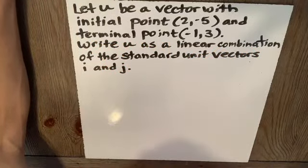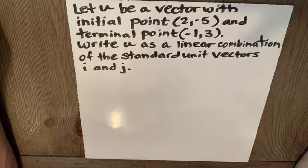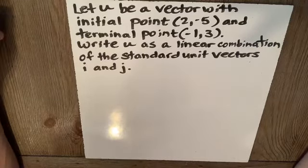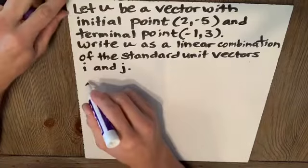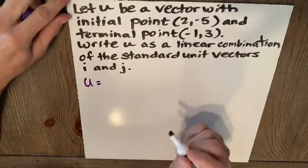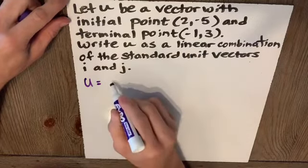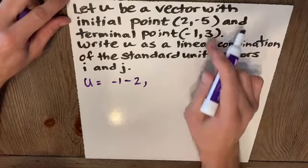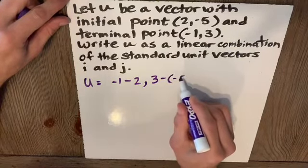Let u be a vector with initial point (2,-5) and terminal point (-1,3). Write u as a linear combination of the standard unit vectors i and j. This is a very simple problem. Let's first find out what vector u is. Vector u will be x final, which is -1, minus x initial, comma y final, which is 3, minus y initial, which is -5.